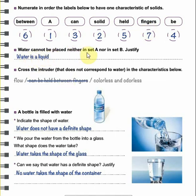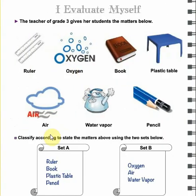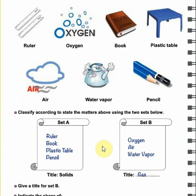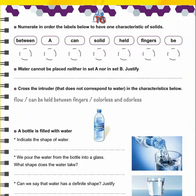Water cannot be placed in Set A nor in Set B — justify. Why can't we place it? Because Set A is solids and Set B is gases, whereas water is from the third state — which is liquids. So we have to say: because water is a liquid.